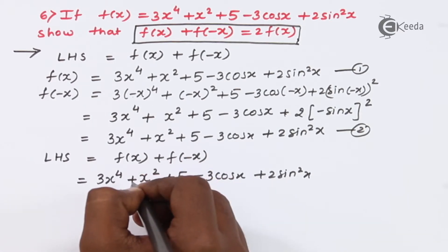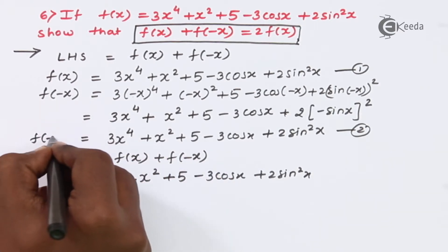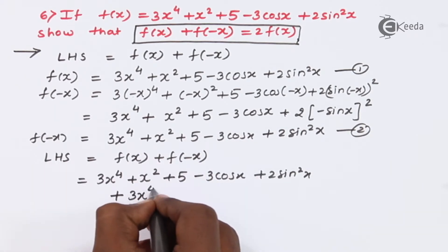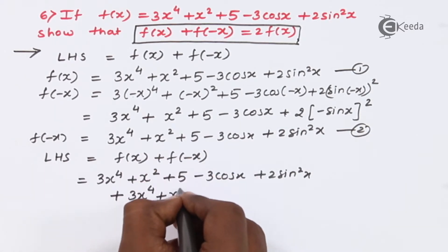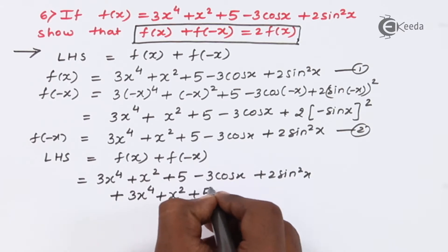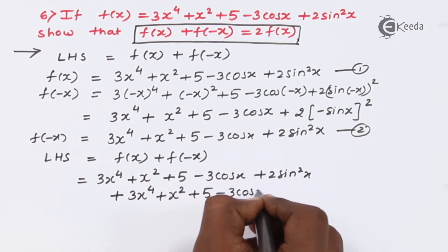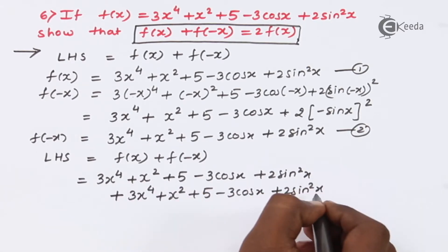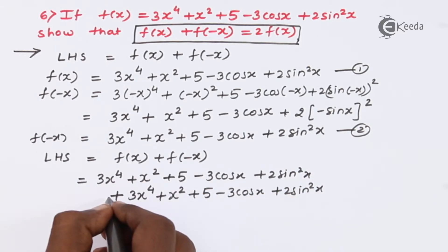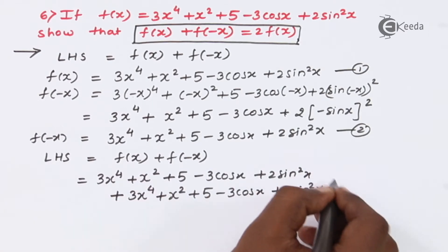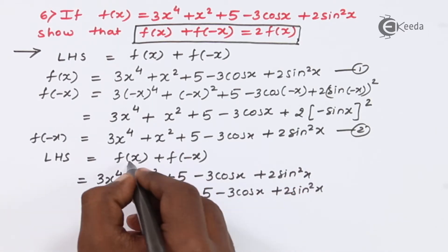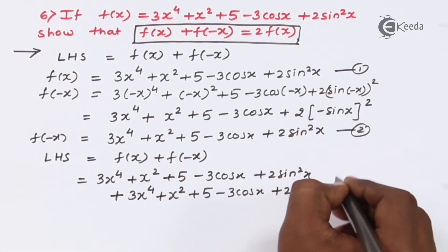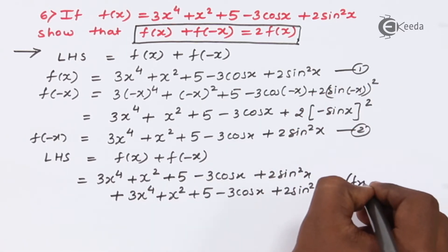LHS equals f(x) plus f(-x). So f(-x) is 3x raised to 4 plus x squared plus 5 minus 3cos(x) plus 2sin²(x). Note that we have not used brackets here because there is a plus sign outside; if there were a minus sign we would use brackets. These values of f(x) and f(-x) come from equations 1 and 2.